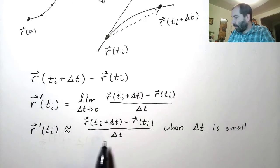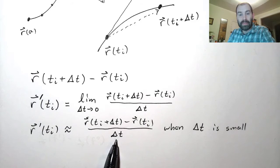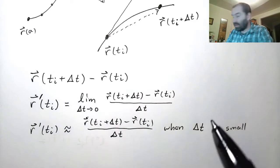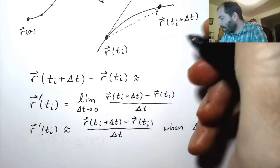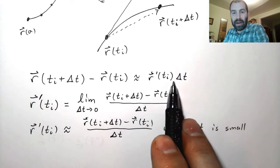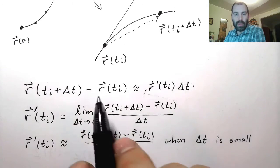Well, if I just multiply both sides by delta t, I can see that this quantity, which is what we wrote down at first, is approximately equal to r prime of ti times delta t.